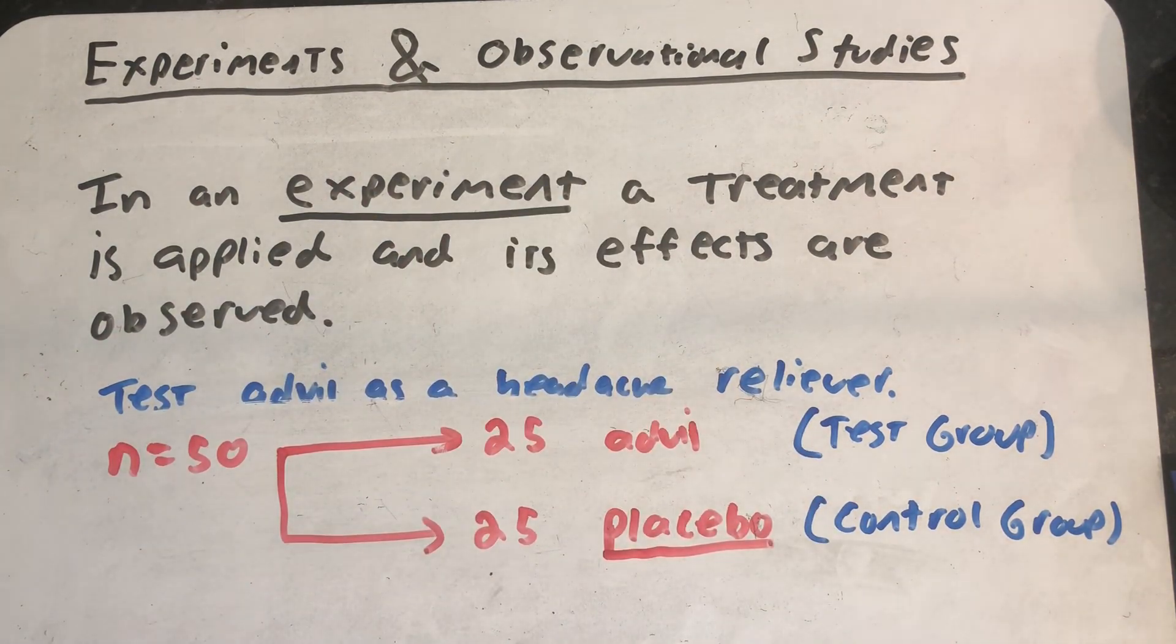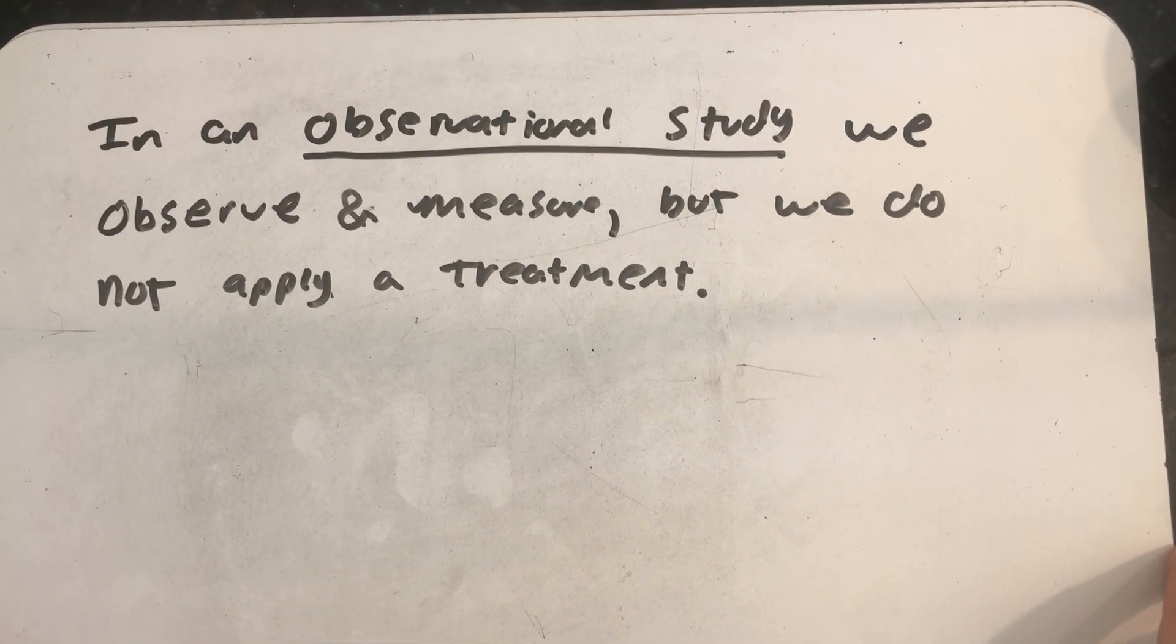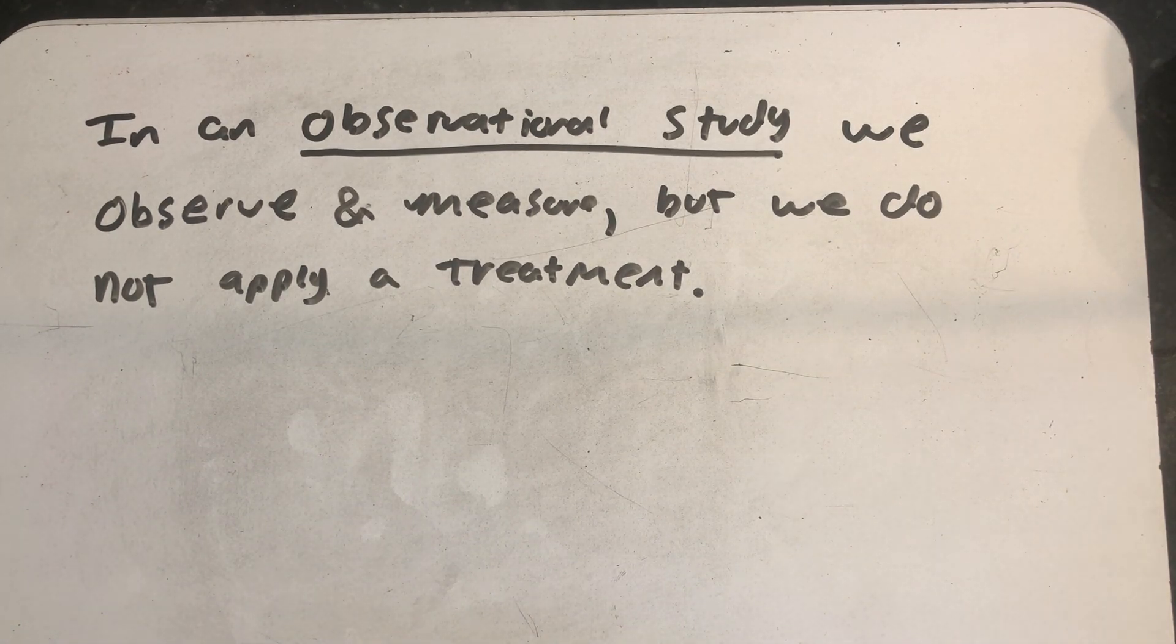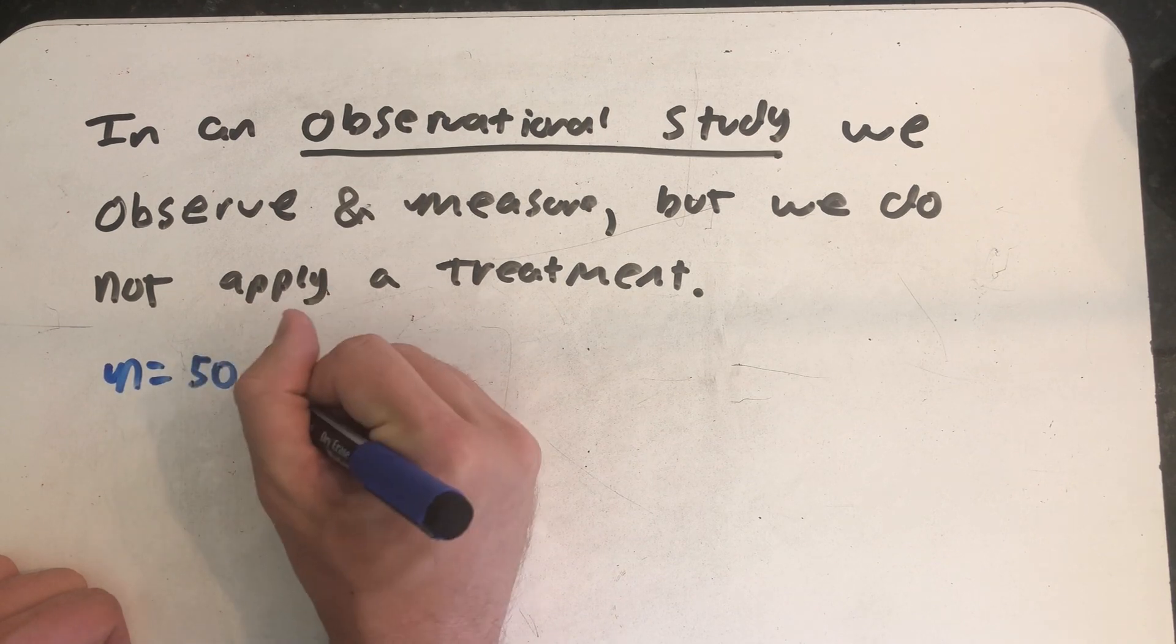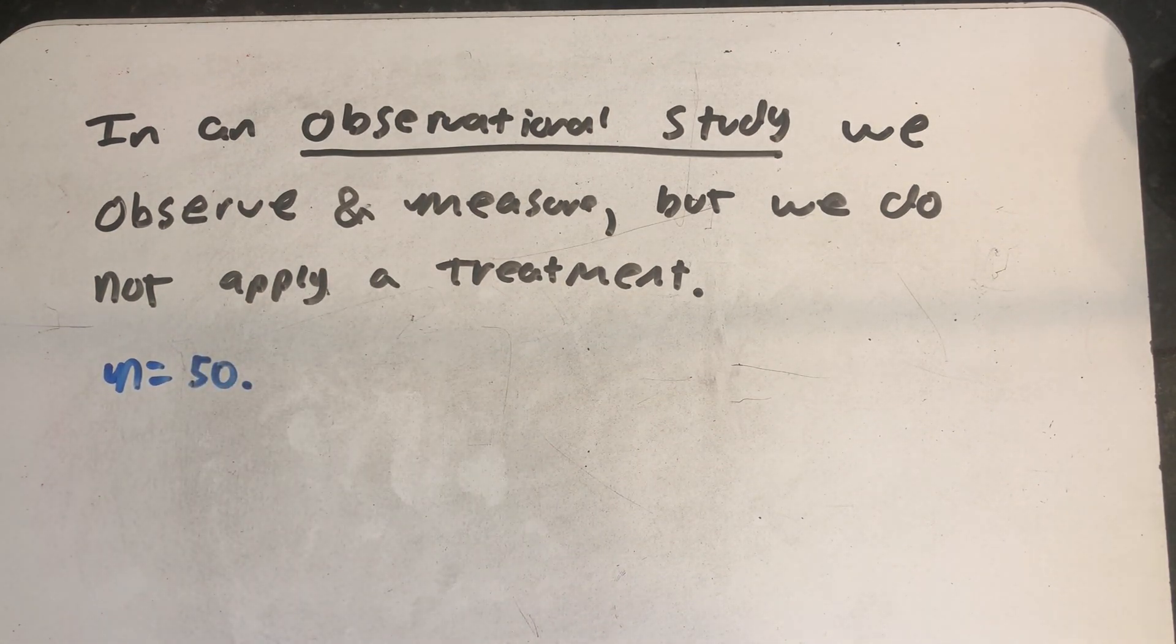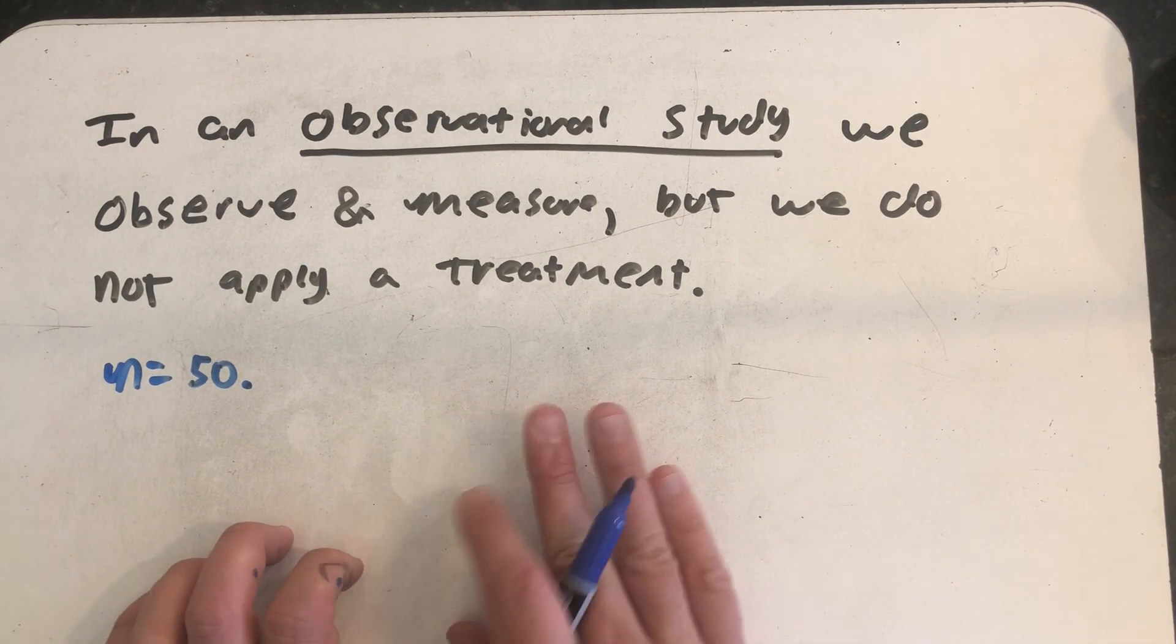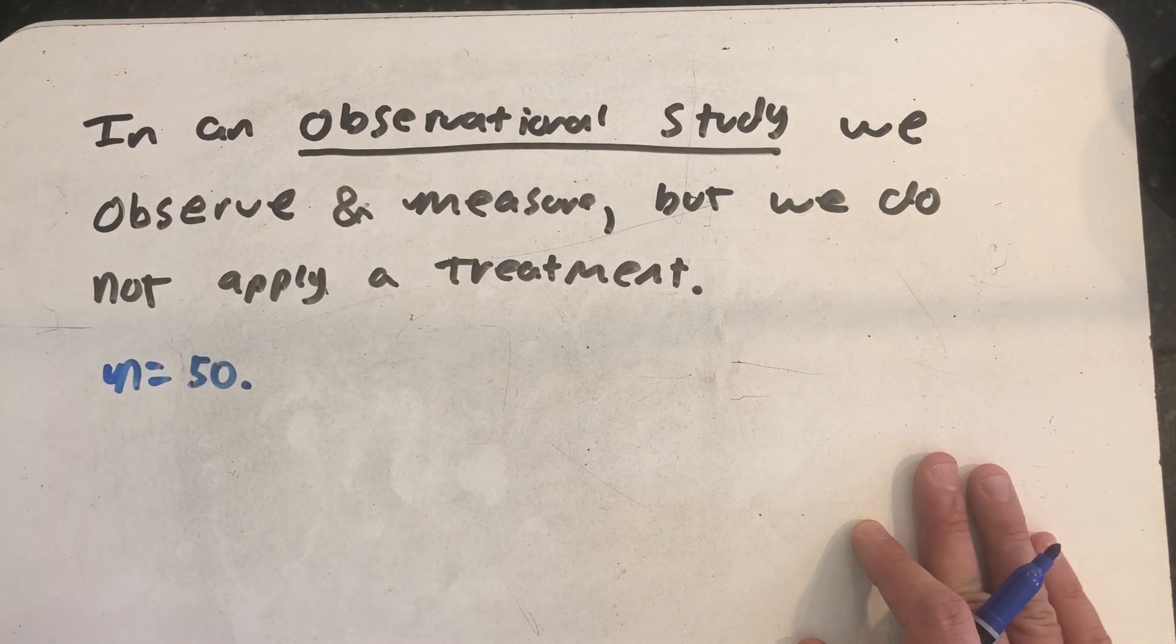So let's talk about observational studies. Well, the key difference is in an observational study, we don't apply a treatment. We only observe and measure. And so if I wanted to study the effects of Advil through an observational study, I have to take a sample of people and then observe whether they used Advil to treat headaches or not, and then have them report to me the effects of Advil.